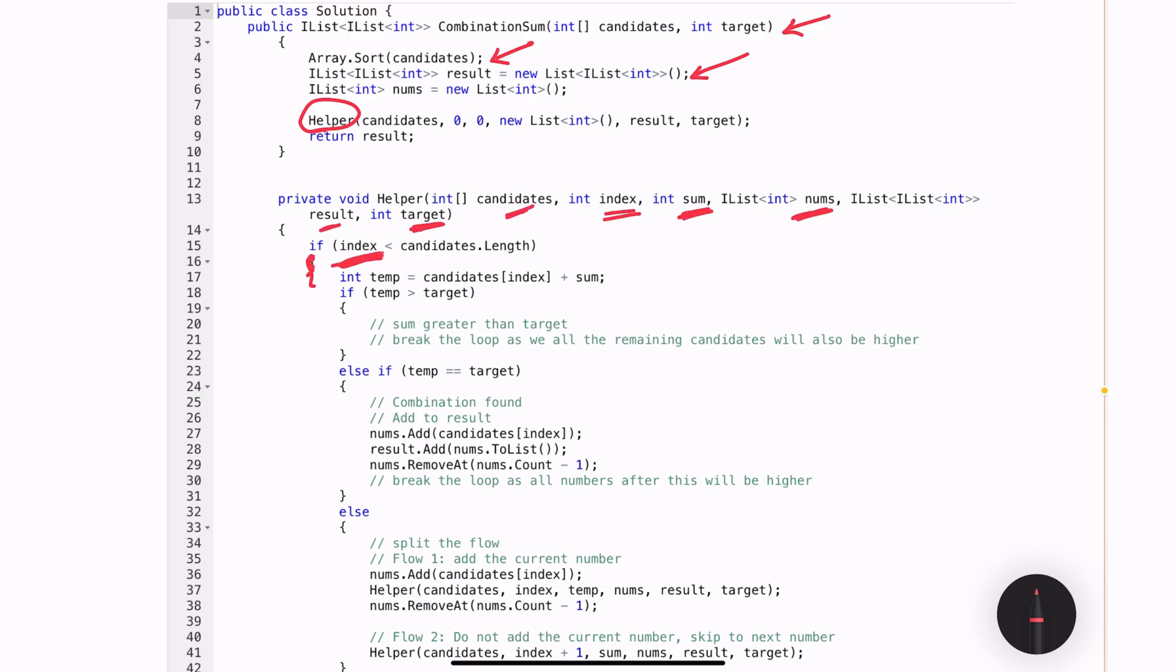If index is less than candidates.length, only then we will go into this if condition. Then I am calculating this new sum or the temp sum by adding the sum that we have calculated so far and the current position that index is pointing. If the temp sum is greater than the target, it means we cannot do anything, we don't need to iterate forward, so we will do nothing.